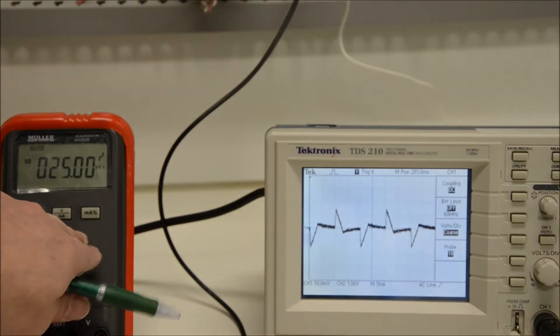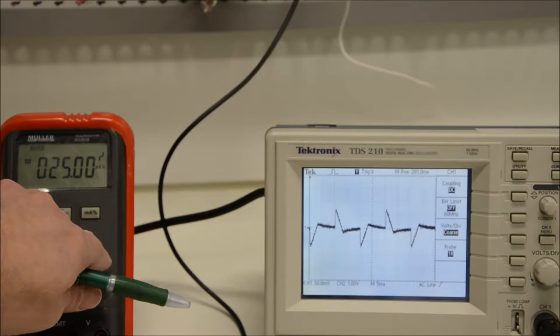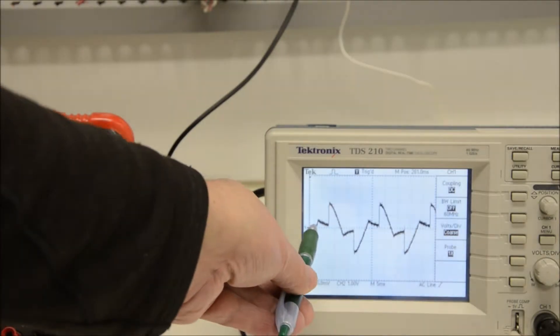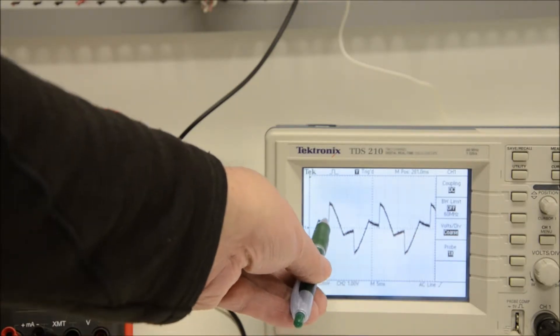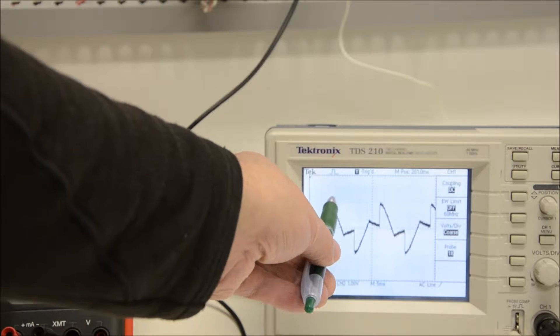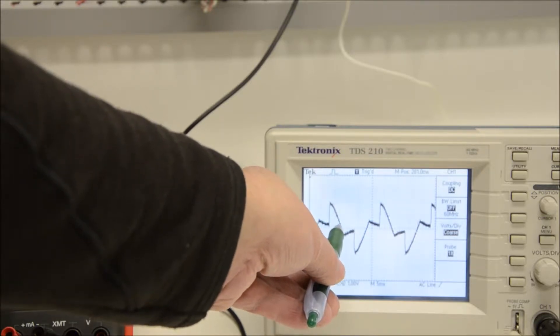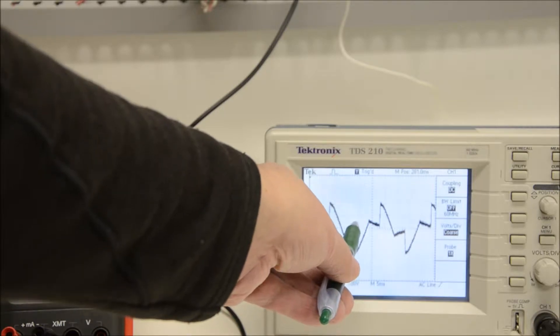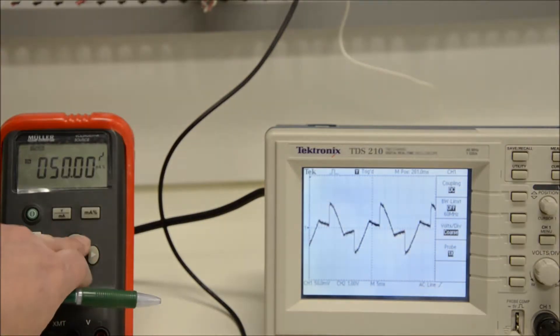Now as I increase my demand to 50%, you can see that we go through half a sine wave. We turn on, follow the sine wave, then off again. And then again there's a delay and it comes on. We'll now go to 75%.